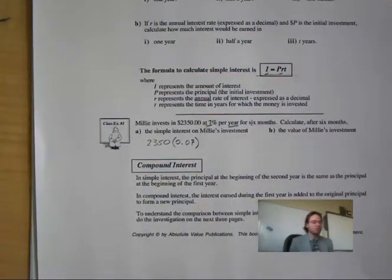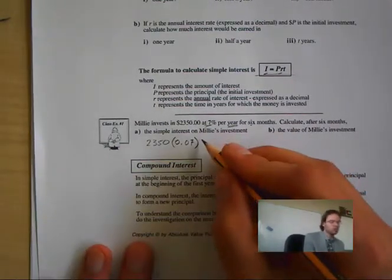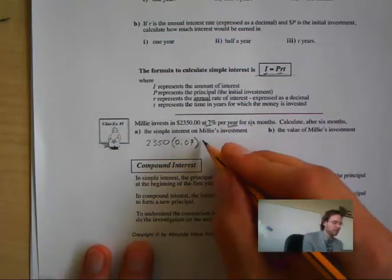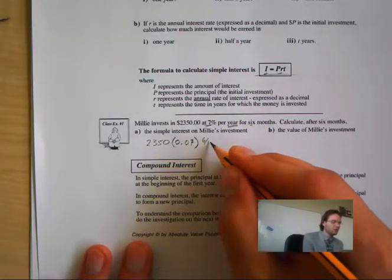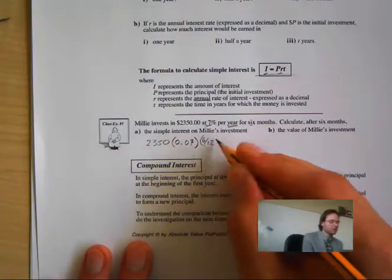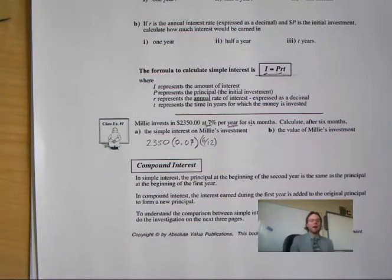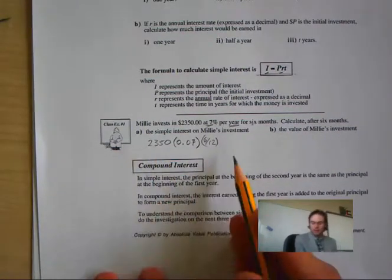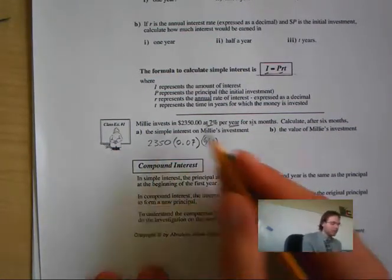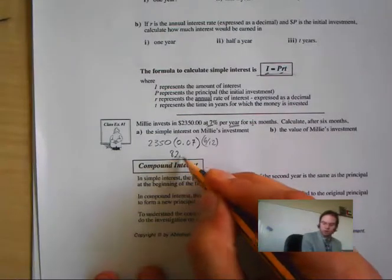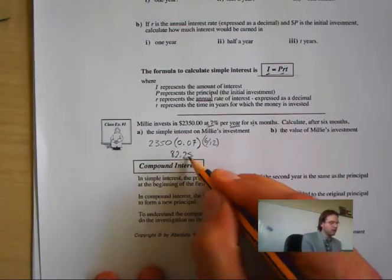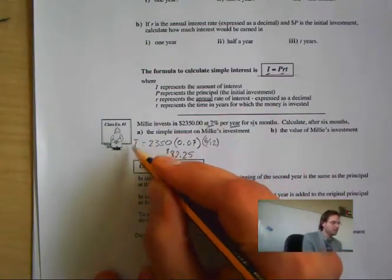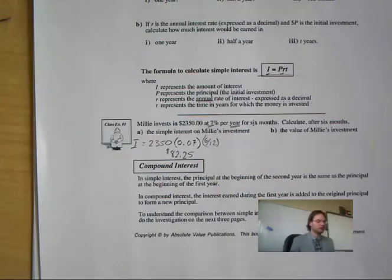How many months are there in a year? There are 12 months in a year and we are doing 6 out of the 12 months, which is half a year. So when I multiply all this together I am going to end up getting $82.25, which is how much she will make. That is her interest.